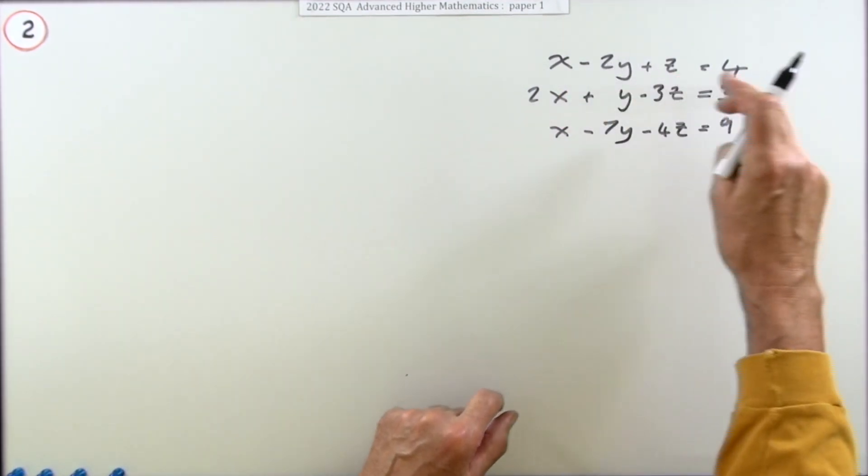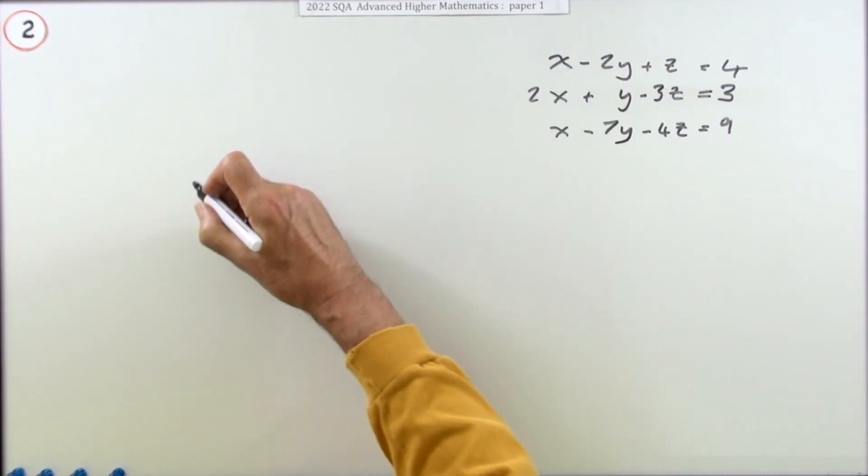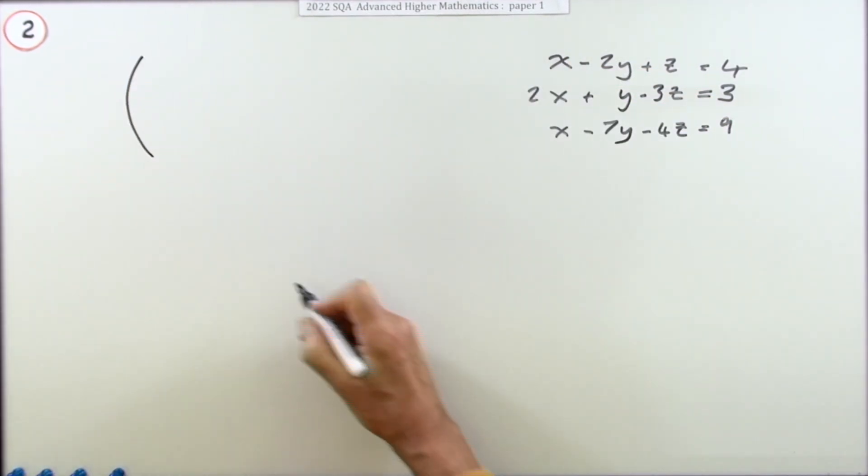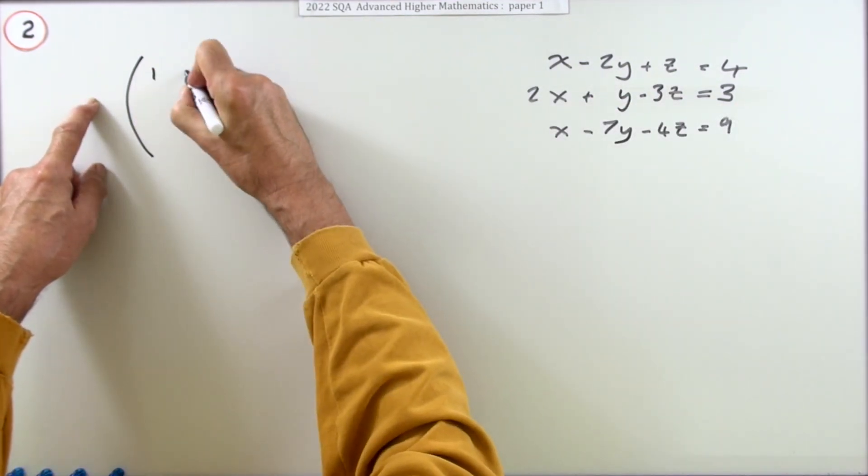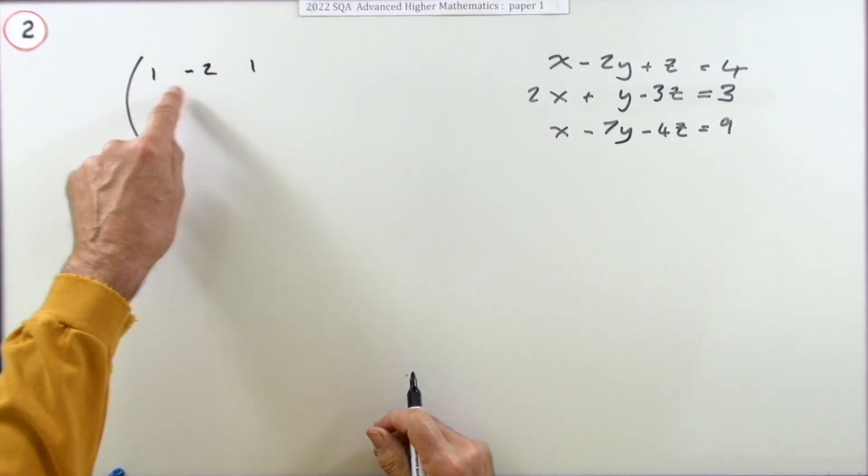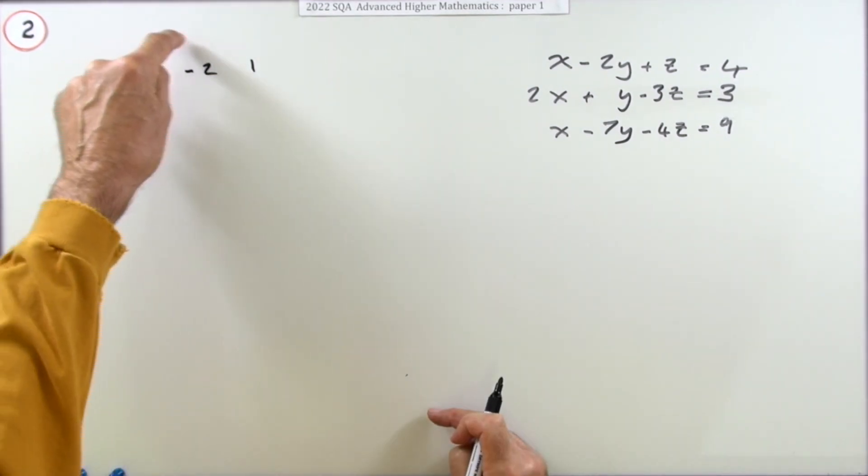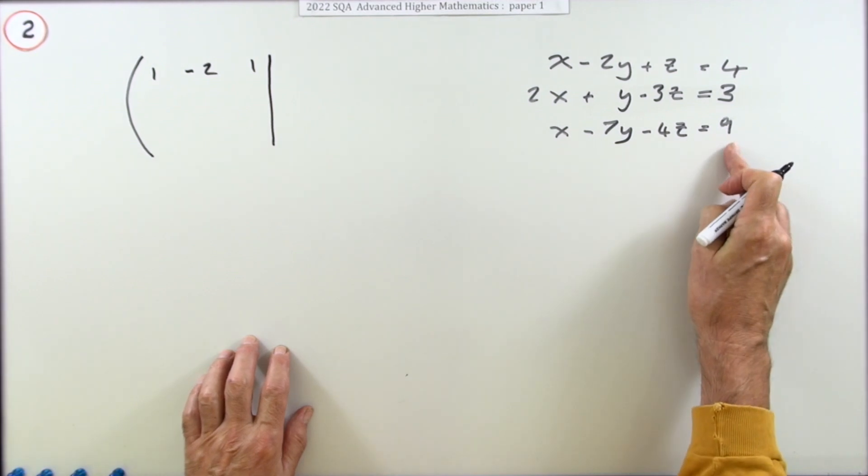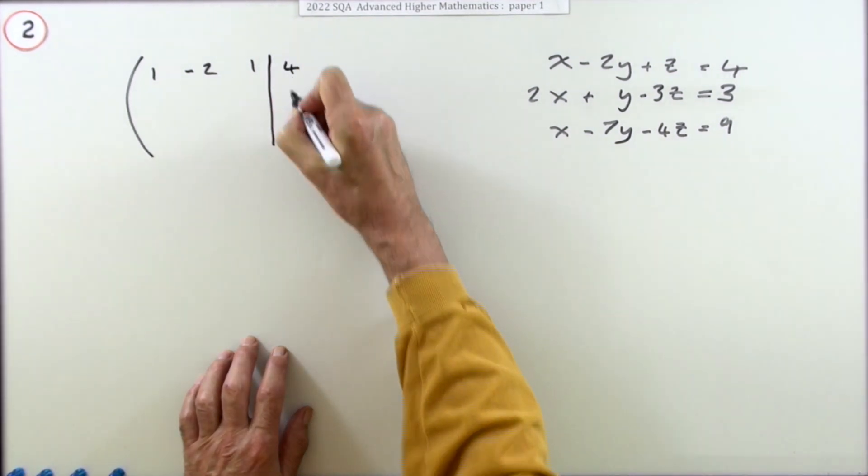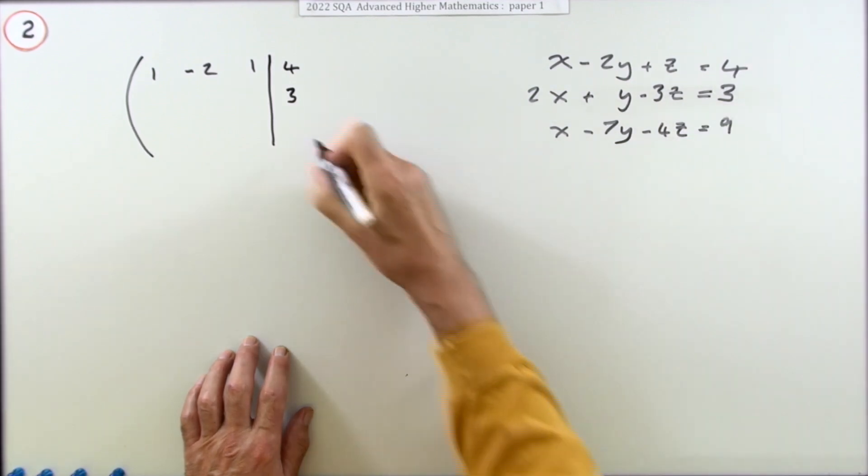So what you do is you just take the information here - and the information just means these coefficients and values - so you take the information and put it into a matrix, a matrix of coefficients. So you've got 1, -2, 1 where they're in that specific order x, y, z, and then I've got a join where I put in this 4.